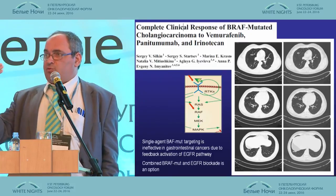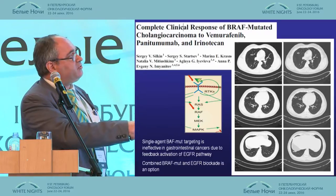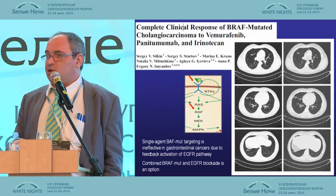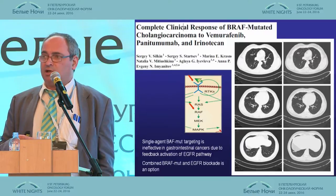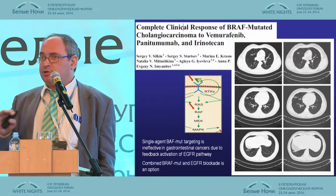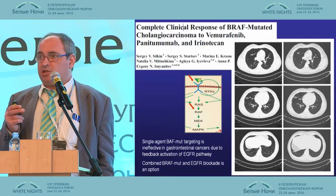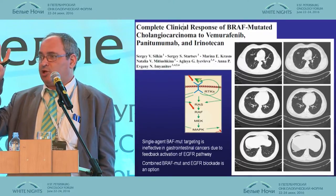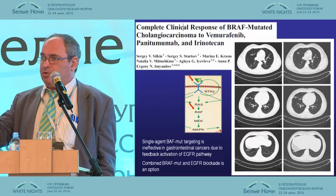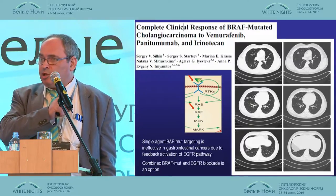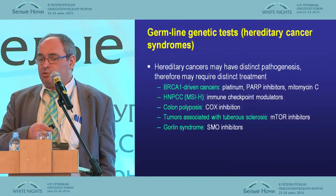The solution comes from understanding these resistance mechanisms: combining EGFR inhibition and BRAF inhibition together achieves efficacy. For example, in biliary cancer — notoriously resistant to all treatments — a patient with a BRAF mutation (occurring in only 2% of biliary patients) received combined EGFR and BRAF inhibition and achieved a complete response, which would never be seen in standard biliary cancer patients.